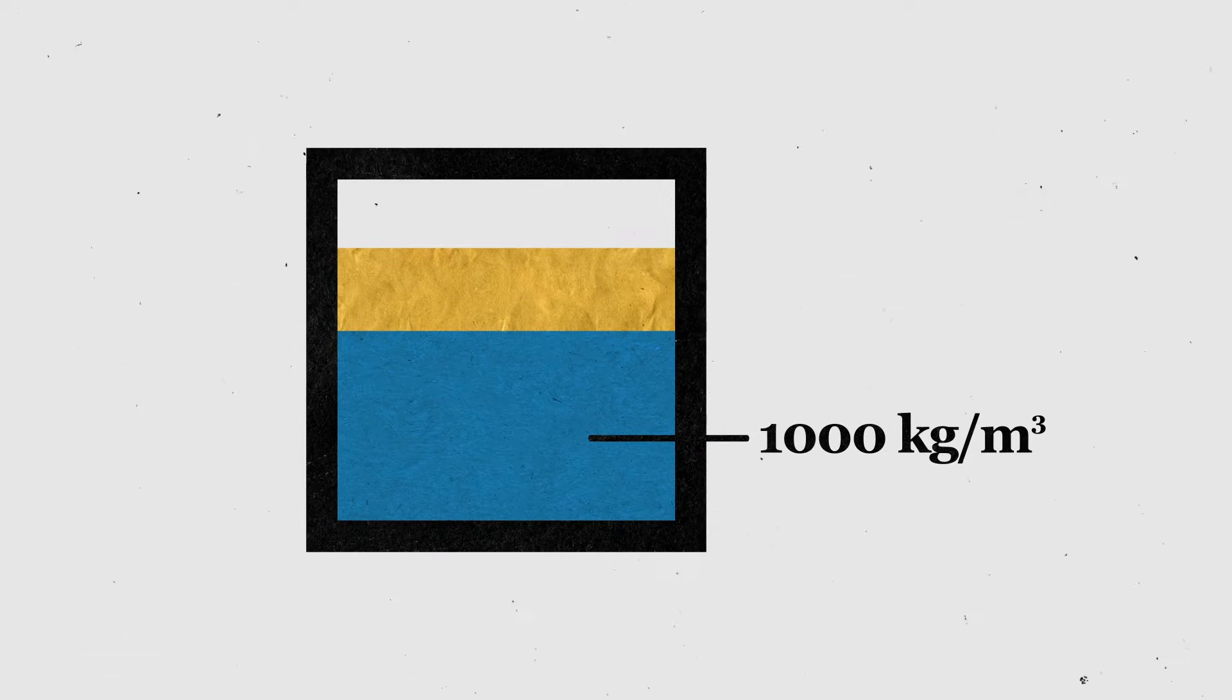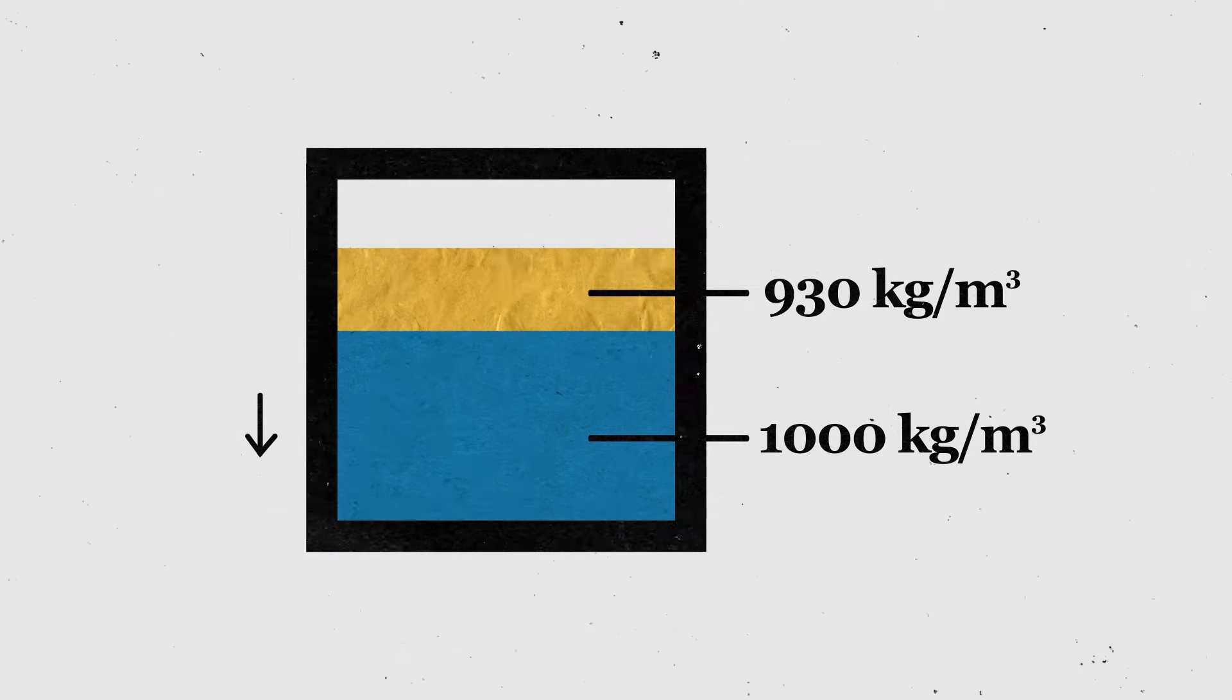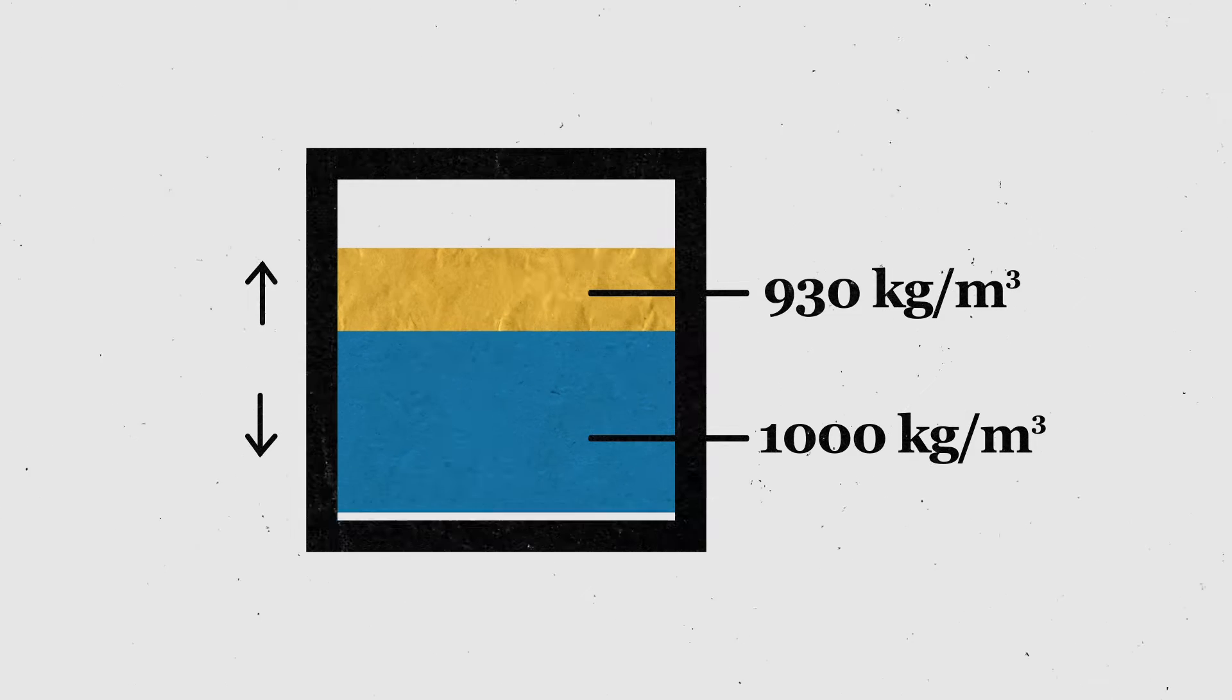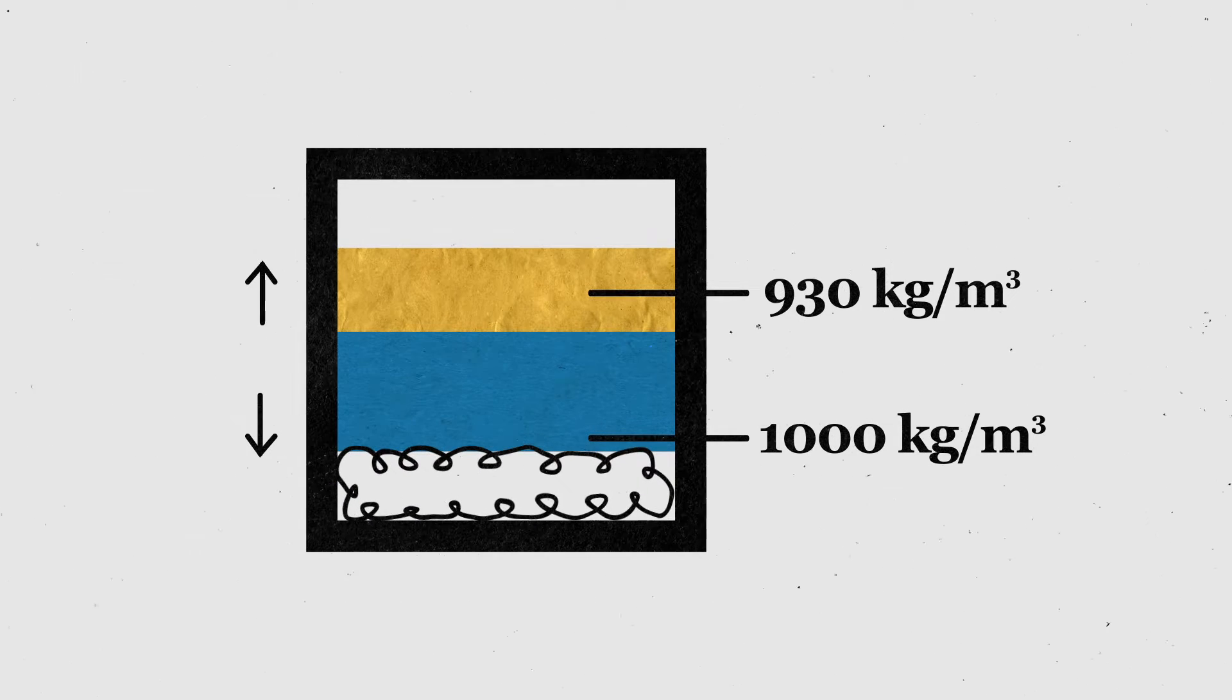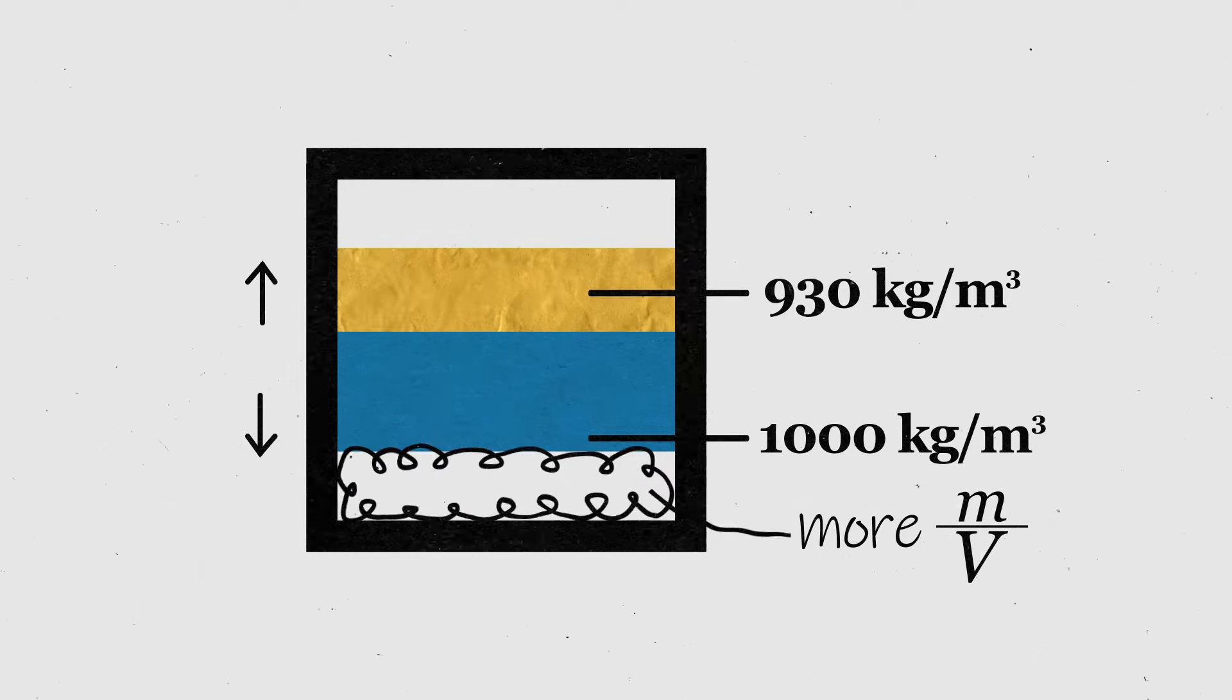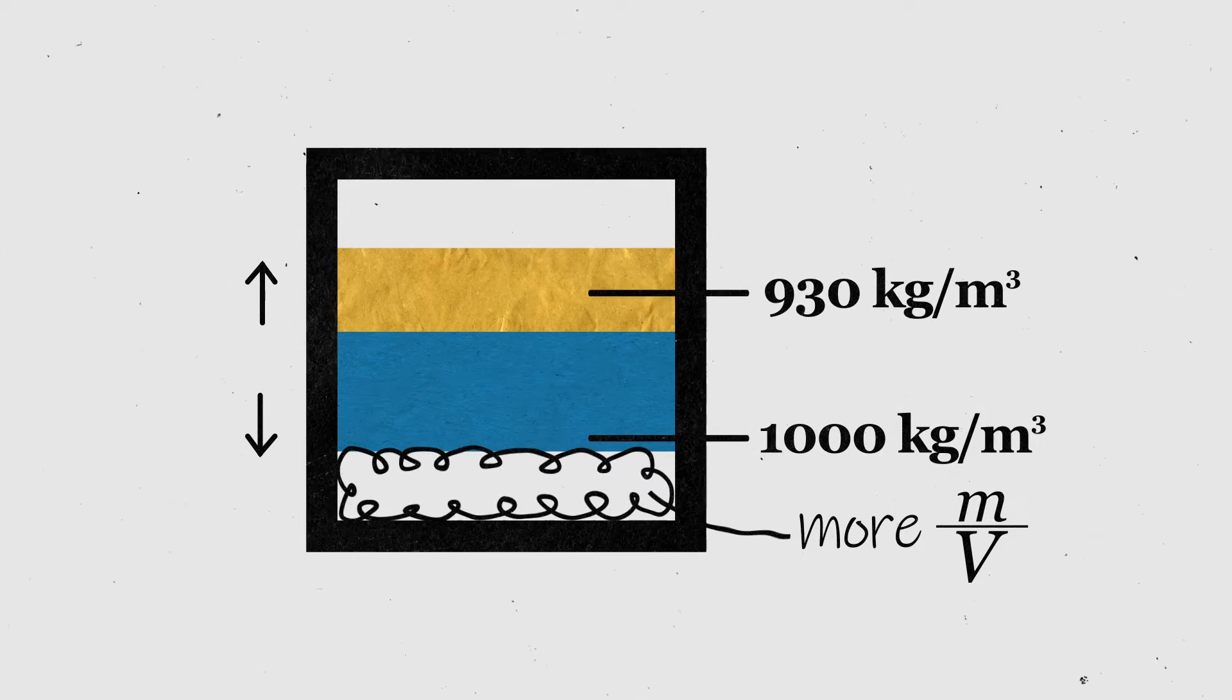You could say that the basic rule is that the order in which substances stack is determined by their density. The more dense, the lower it goes, and vice versa. So, if we want our gas to stay at the bottom, it needs to be more dense than the liquid at the top, which translates to that it has to have more mass.